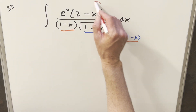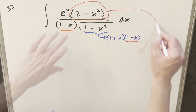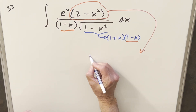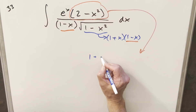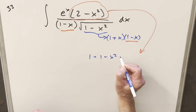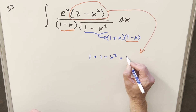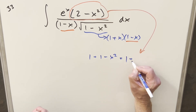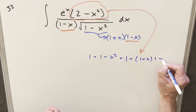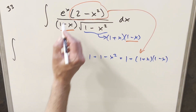I also can take this right here and do something similar. For 2 minus x squared, what I can do is pull a 1 out and write it as 1 plus 1 minus x squared. Then we can do this exact same factoring and write this as 1 plus 1 plus x times 1 minus x. So let's put this all together and rewrite this.